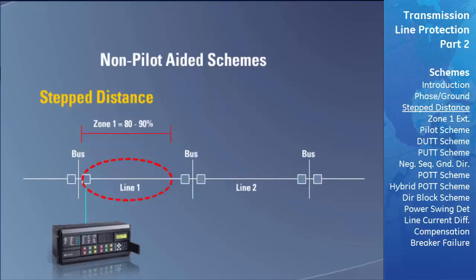The first zone of protection is set to underreach and extends from the beginning of the transmission line to 80 or 90 percent of the entire line's length. This zone has no intentional time delay, so if a fault occurs in this zone, the relay can be sure the fault is on its transmission line and can trip immediately. Zone 1 will not protect the last 10 to 20 percent of the line, known as the end zone. Faults in this area will not be seen by zone 1 and must be cleared by one of the other zones.